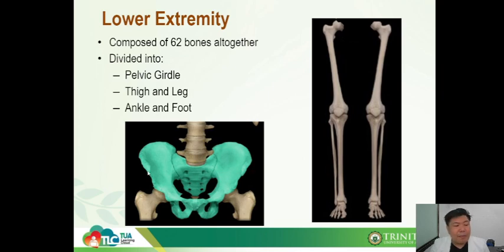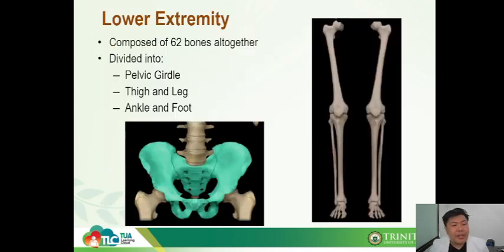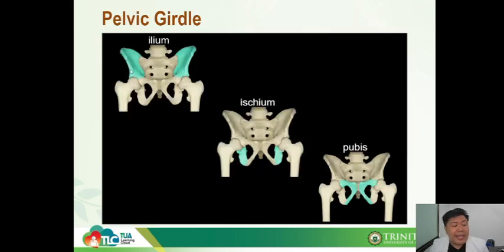Here we have an image of the pelvic girdle or the hip bone, and we also have an image of the thigh, the leg, and the ankle and foot. First, I want to introduce the pelvic bone. This image is not a single bone — instead, it is composed of three bones fused as one: the ilium, the ischium, and the pubis.